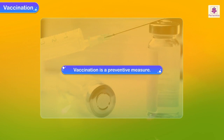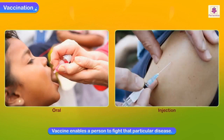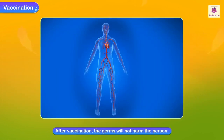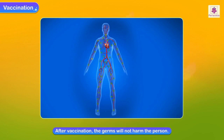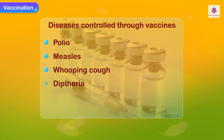Vaccination is a preventive measure. The vaccine, given orally or injected into a person's body, enables them to fight a particular disease. After vaccination, if the germs of that disease enter the body, the person will remain safe. Diseases like polio, measles, whooping cough, diphtheria, hepatitis, and mumps can be controlled through vaccines.